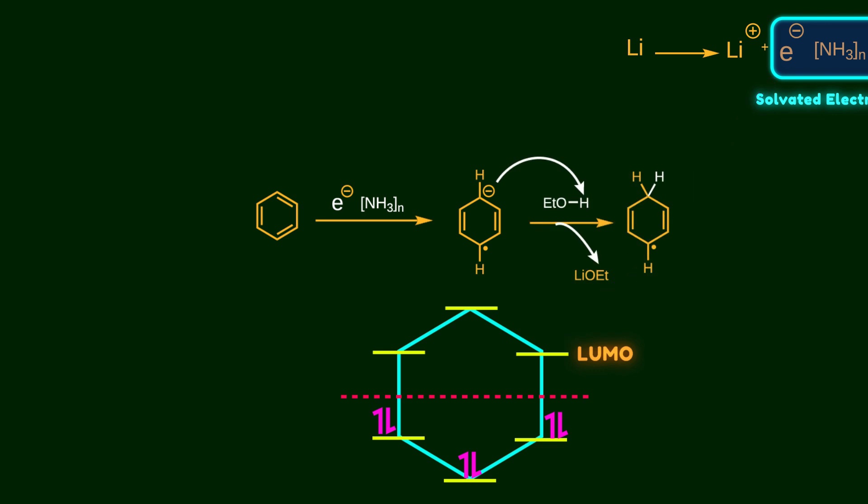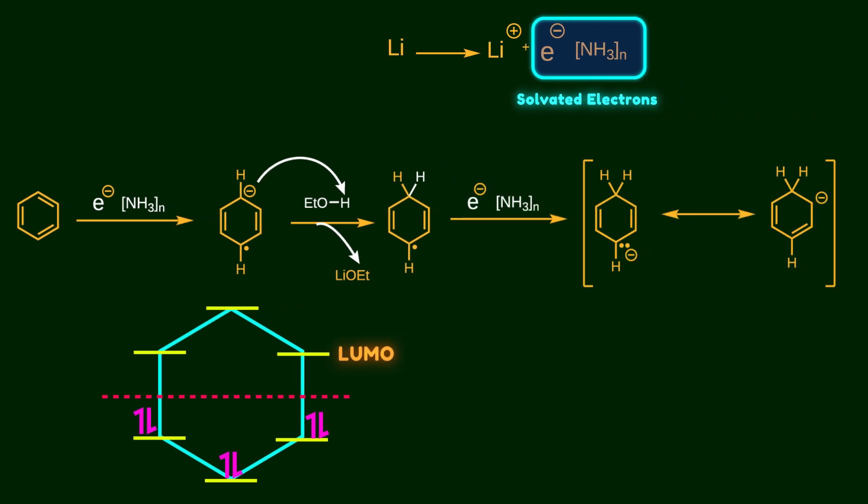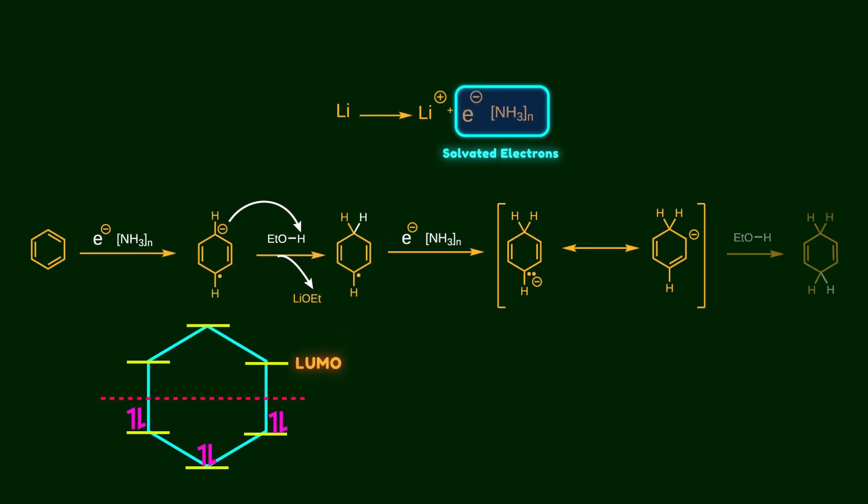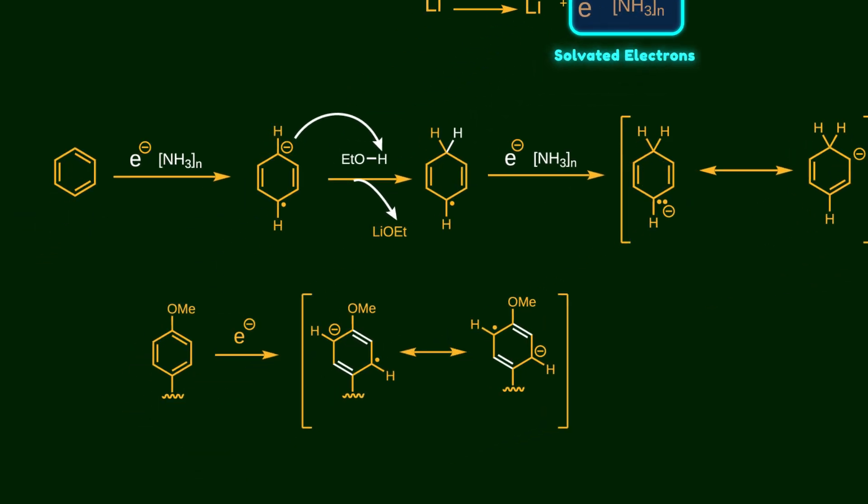The radical anion is very basic, so it picks up a proton from the ethanol present in the reaction mixture. The molecule is no longer anionic, but it still contains a radical. It then accepts another electron, which pairs with the radical to give an anion, and this anion is quenched again by ethanol. In our case, the donating methoxy group stabilizes the ortho and meta electron density, so these positions are protonated by ethanol.